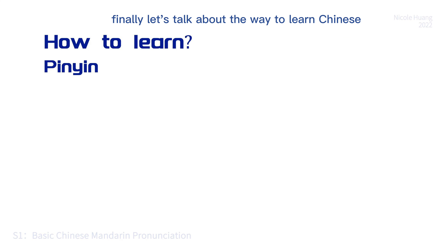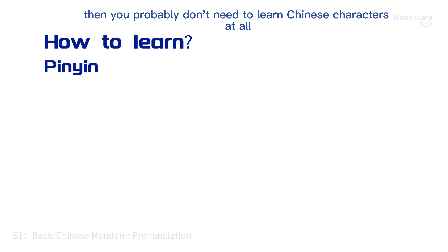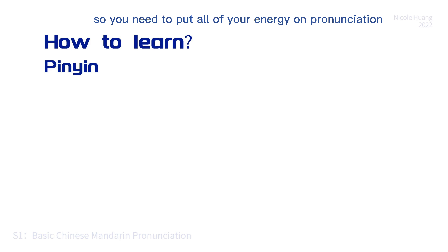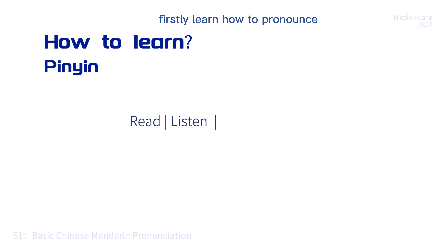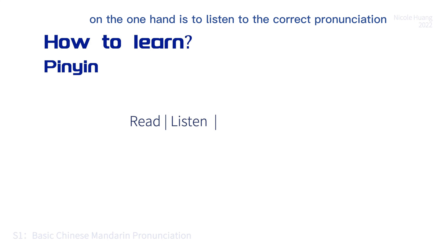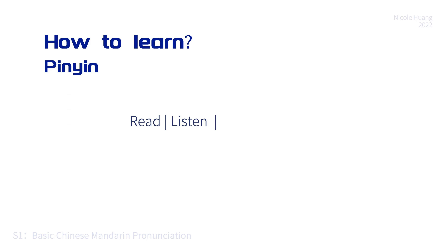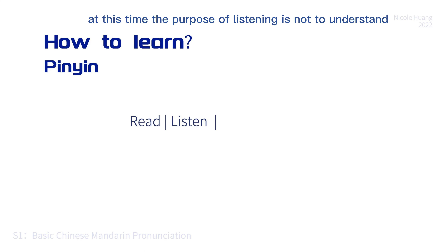Finally, let's talk about the way to learn Chinese. If you don't have to pass any professional Chinese proficiency test or do business with Chinese companies, then you probably don't need to learn Chinese characters at all — put all your energy on pronunciation. When we practice Pinyin, firstly learn how to pronounce, then read, listen, read, listen, repeat. Listening on one hand means listening to correct pronunciation, and on the other hand you can listen to some Chinese audio or video materials. In the beginning, children's animation is a good choice. The purpose of listening at this stage is not to understand, but to adapt to Chinese pronunciation and establish a sense of the language.